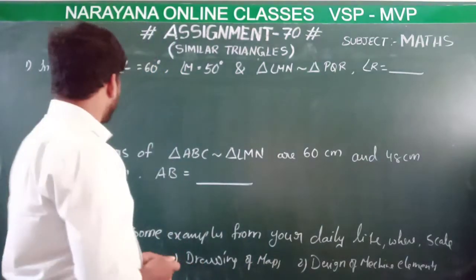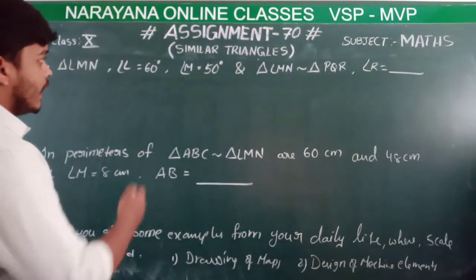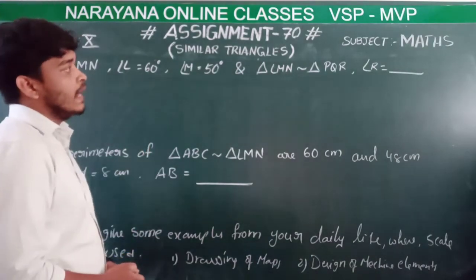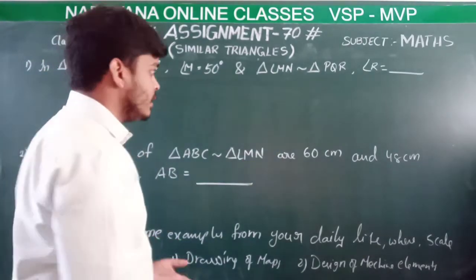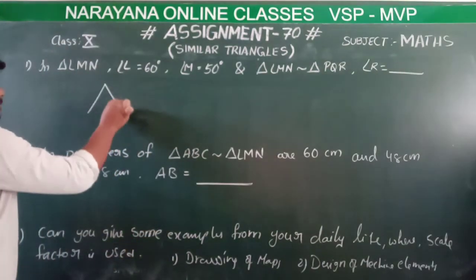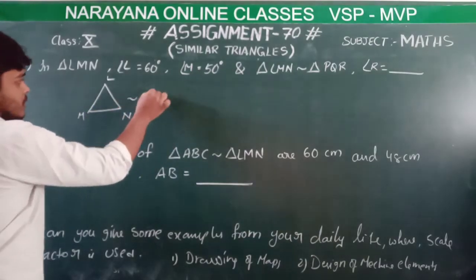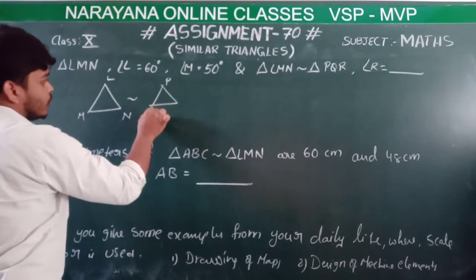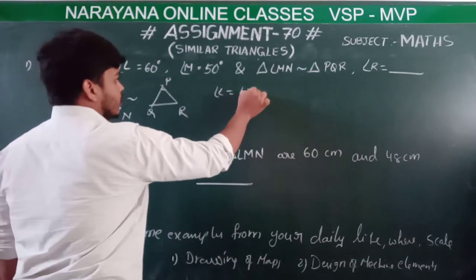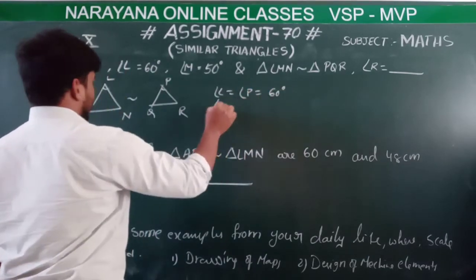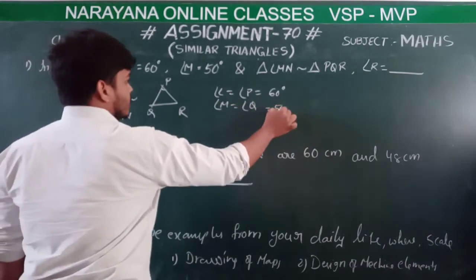In the first question, in a triangle LMN, angle L is 60 degrees, angle M is 50 degrees, and triangle LMN is similar to triangle PQR. Since the two triangles are similar, angle L is equal to angle P which is 60 degrees, and angle M is equal to angle Q which is 50 degrees.